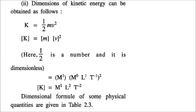Let us find the dimension of kinetic energy. We know that kinetic energy is given by half Mv². The constant half is a number and is dimensionless, so we do not take it into account. We need to find the dimensions of M and V.